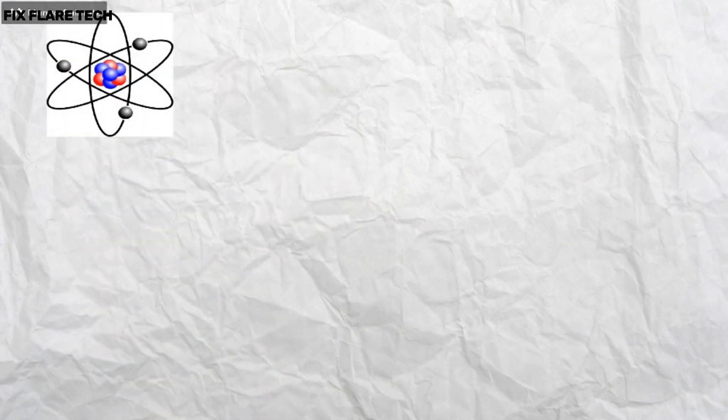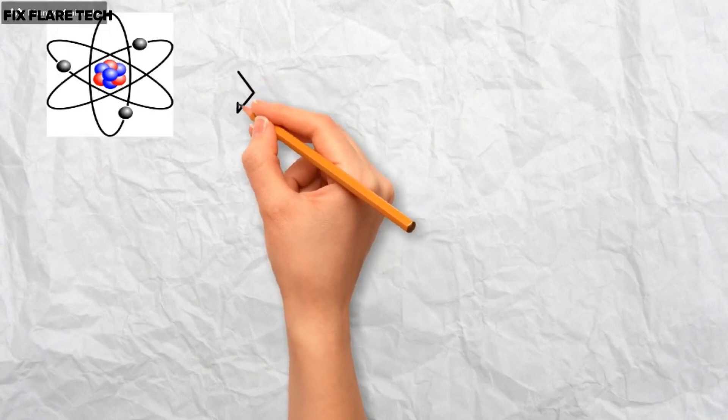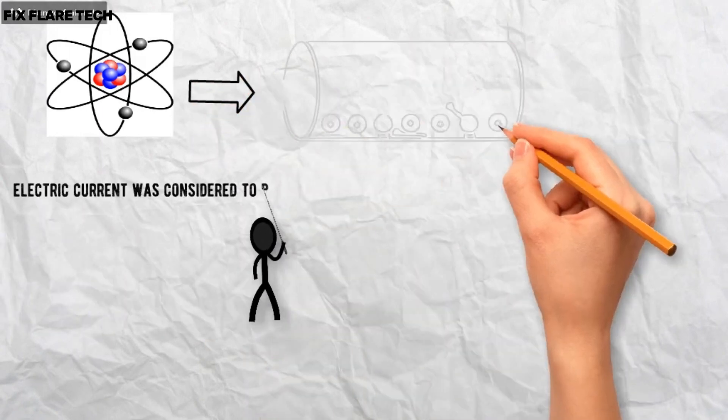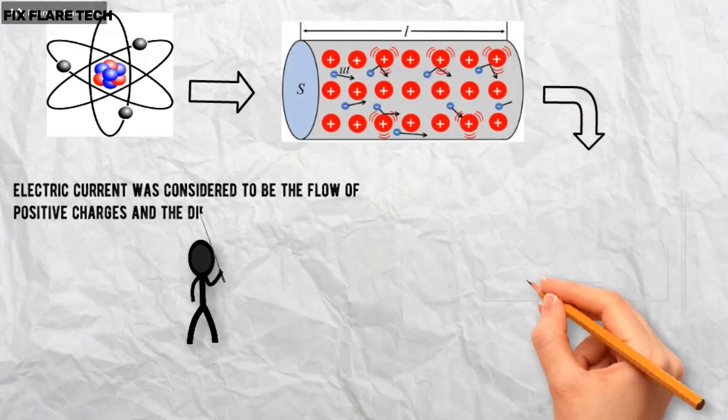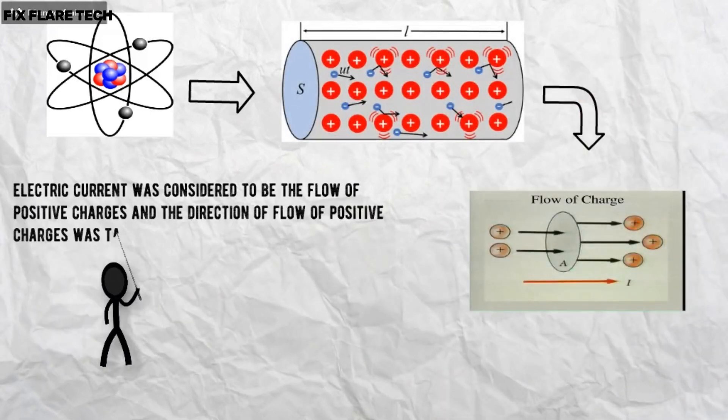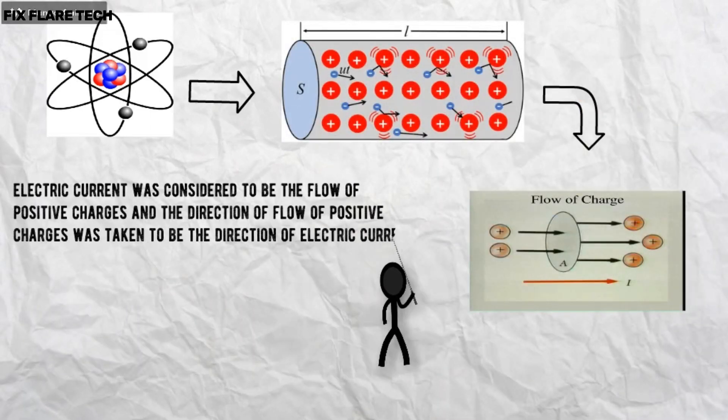However, electrons were not known at the time when the phenomenon of electricity was first observed. So, electric current was considered to be the flow of positive charges and the direction of flow of positive charges was taken to be the direction of electric current.